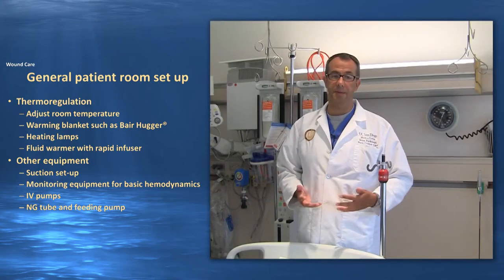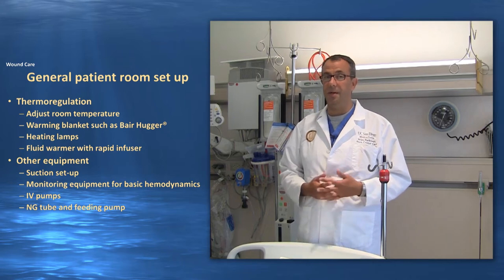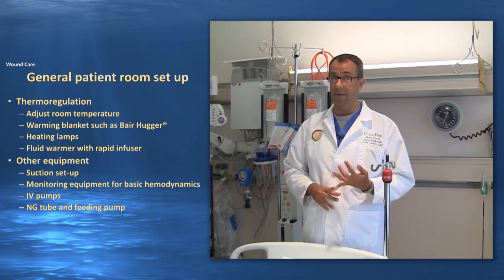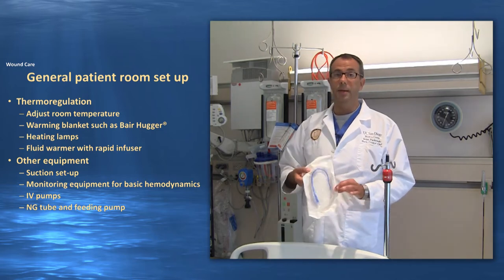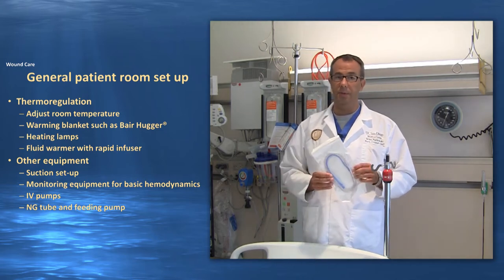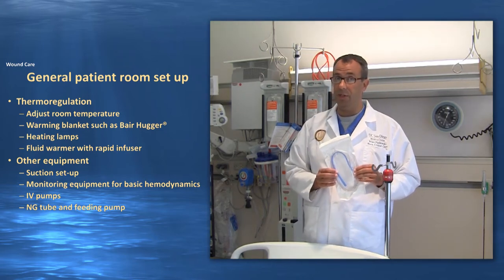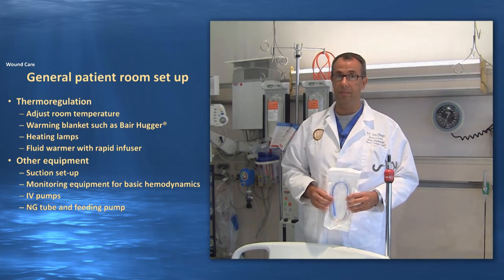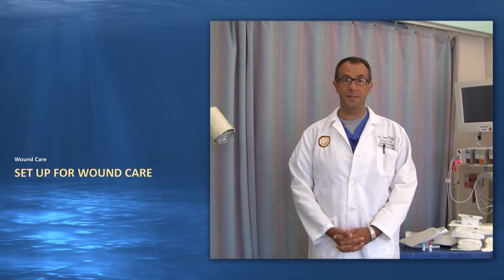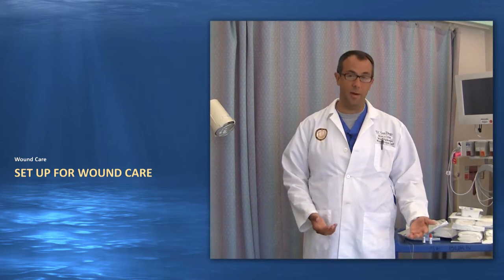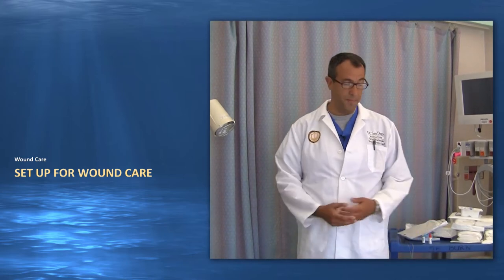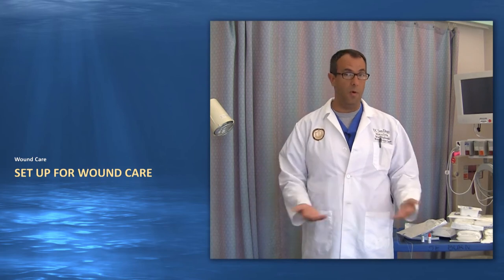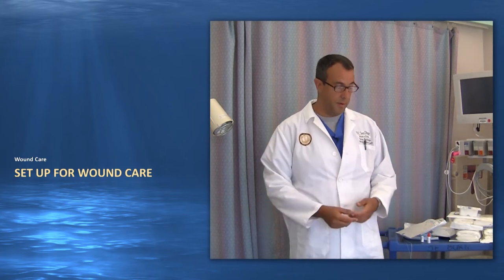Other items in your cache that can be used for larger burn patients are IV pumps and nasogastric tubes — initially for gastric decompression and then for feeding, along with the feeding pump. Along with basic room setup, you're now going to want to get set up to take care of your burn patient with the dressings. On your cache we have a whole array of things that will help you with wound care.